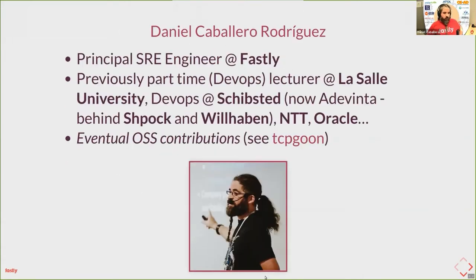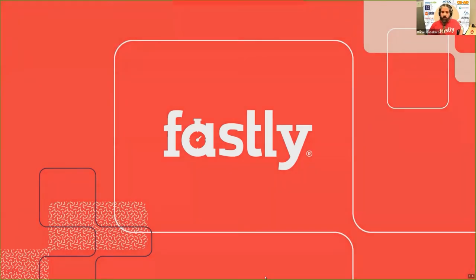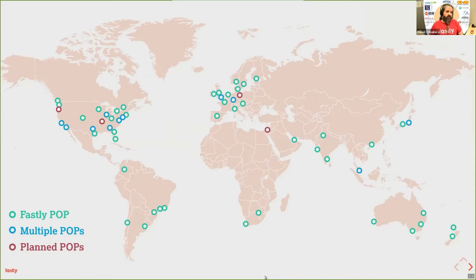A very quick introduction. This is Daniel Cabello-Rodriguez. I've been working for Fastly for almost two years now. I was previously a part-time teacher for La Salle University in a DevOps training course, and also previously working for Shifted, now called Adivinta, the company behind Spoke with presence in Germany. I also occasionally code and try to share things as open source software — one example being TCPGoon.